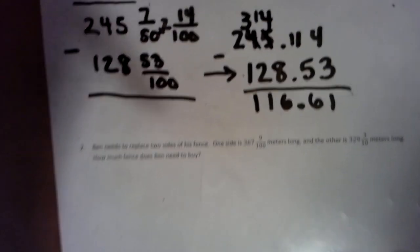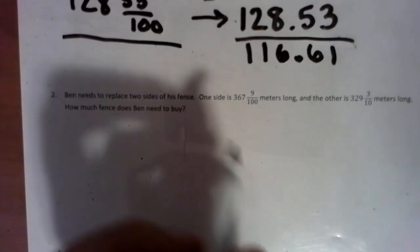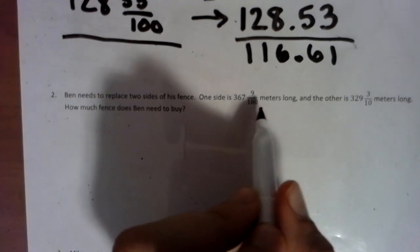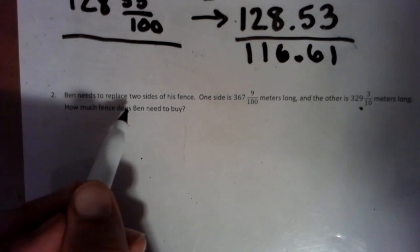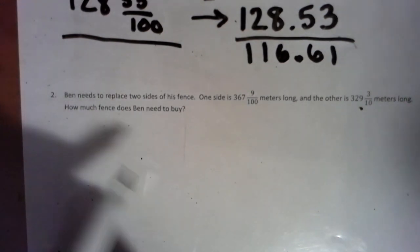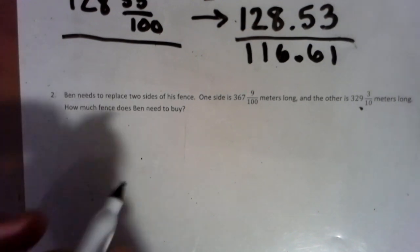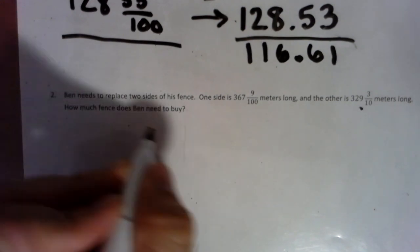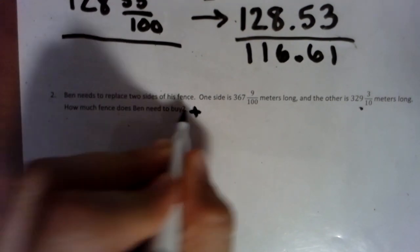Looking at the next problem. All right. We both have decimals for those. So Ben needs to replace two sides of his fence. One side's this long, the other side's that long. How much fence does Ben need to buy? He's only replacing two sides. He needs this and this. That means how much fence does he need to buy? He needs both. Both means add.